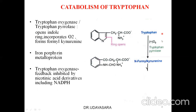First, tryptophan is converted to N-formylkynurenine, catalyzed by the enzyme tryptophan pyrolase, otherwise known as tryptophan oxygenase. It requires molecular oxygen, making it a dioxygenase enzyme that opens the indole ring, introducing oxygen atoms into the molecule. Tryptophan pyrolase is a heme protein and is feedback-inhibited by nicotinic acid derivatives including NADPH.